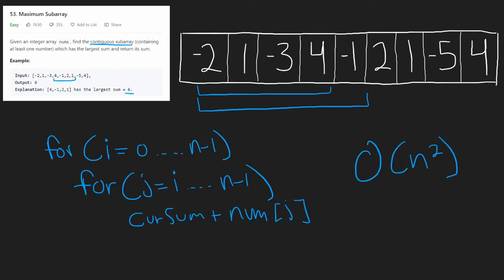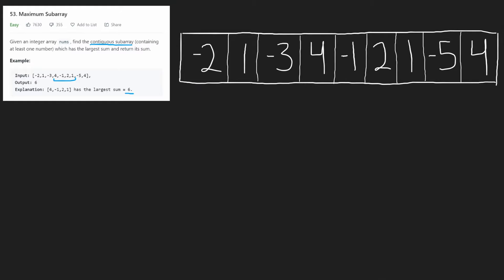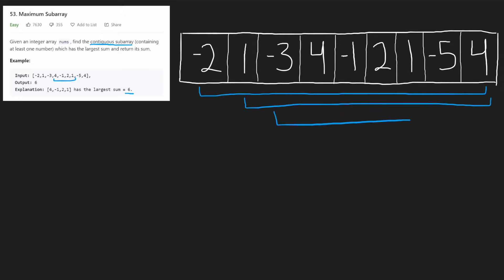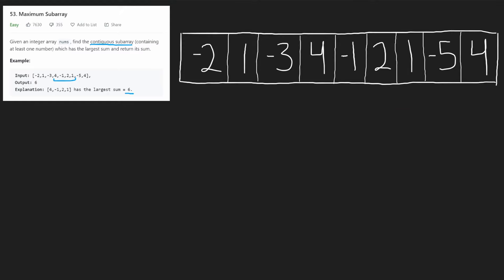But can we do even better? The question you should ask yourself is: do we have to compute every subarray starting at every single value in the array? Do we have to start at every single value and compute every subarray that comes after it? I don't think we do. Remember, we're trying to find the maximum subarray — we can use that knowledge to make a shortcut.